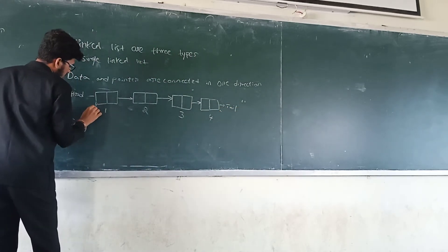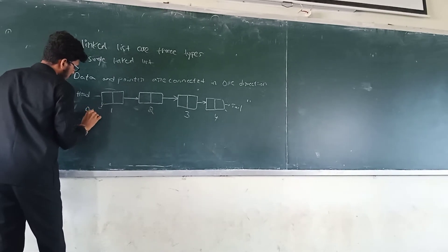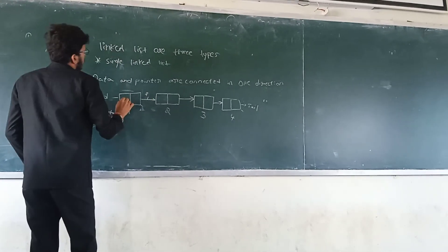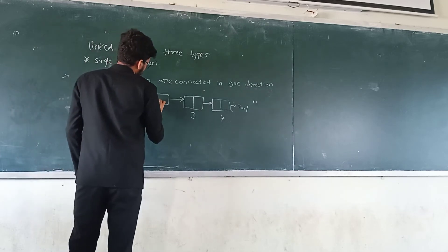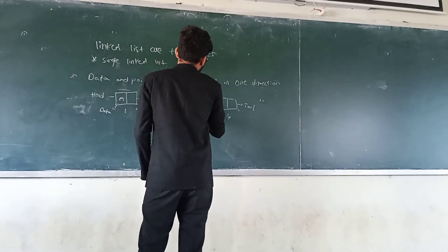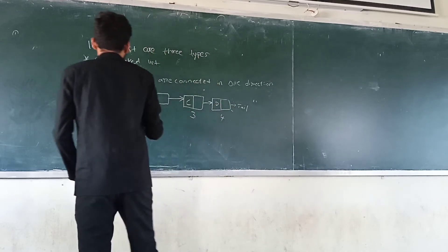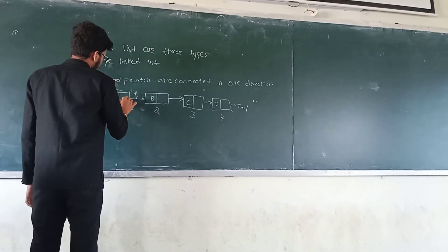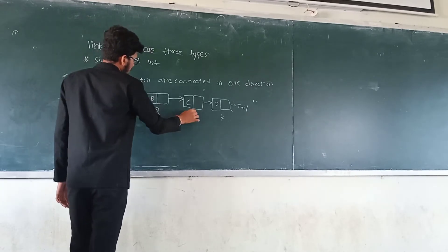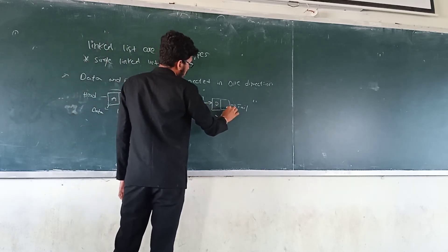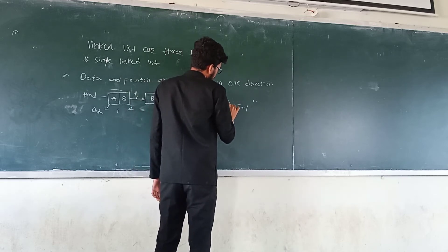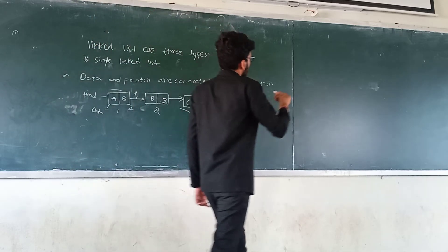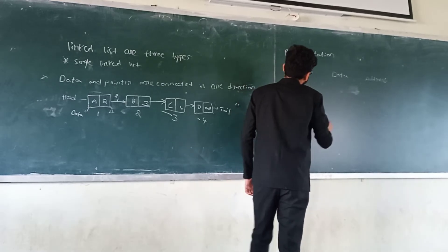We can take the first address field and data field. The second one is address field or pointer. Each node will contain data and the address of the next node. The last node has null because the next node is not there.